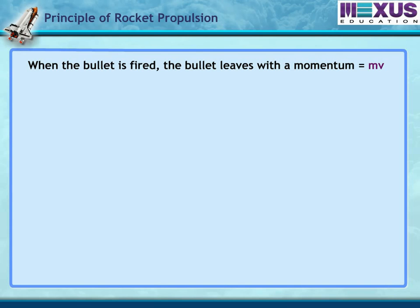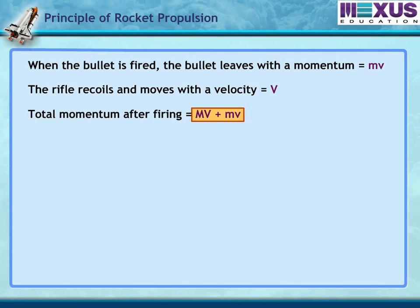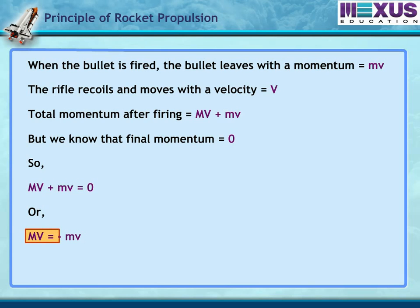When the bullet is fired, the bullet leaves with a momentum equal to mV. The rifle recoils and moves with a velocity V. Total momentum after firing is equal to MV plus mV. Since final momentum equals MV plus mV equals zero, we get MV equals minus mV.